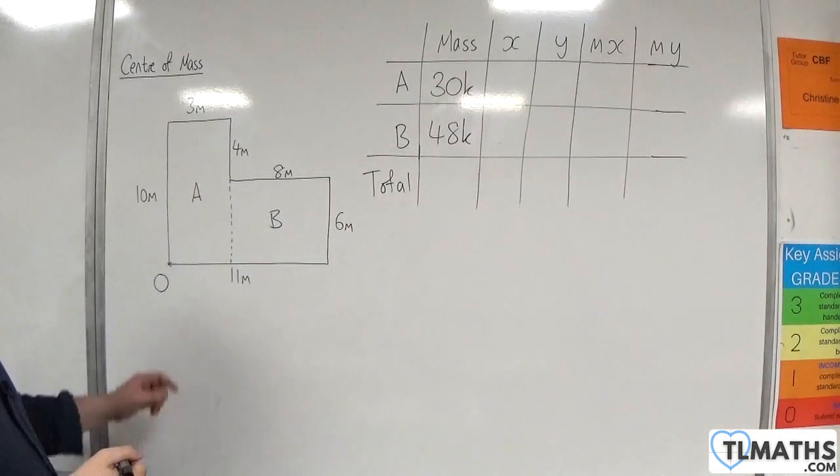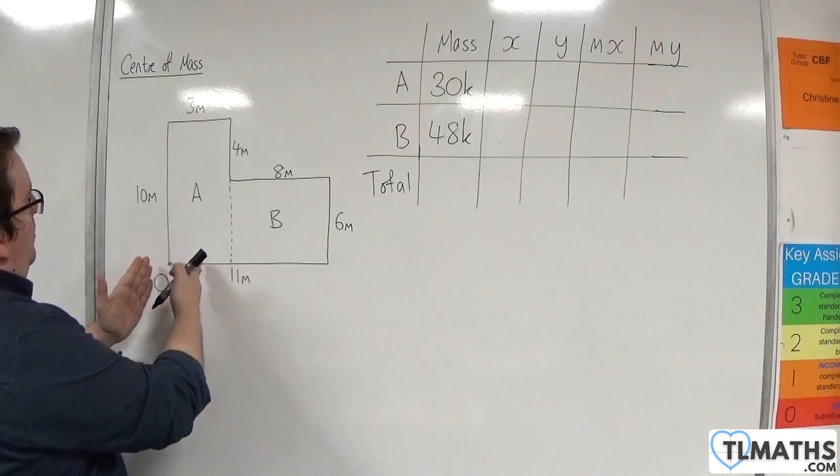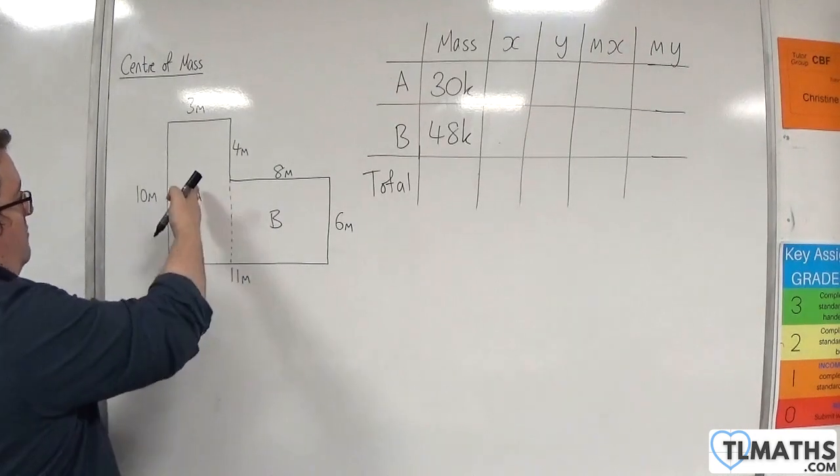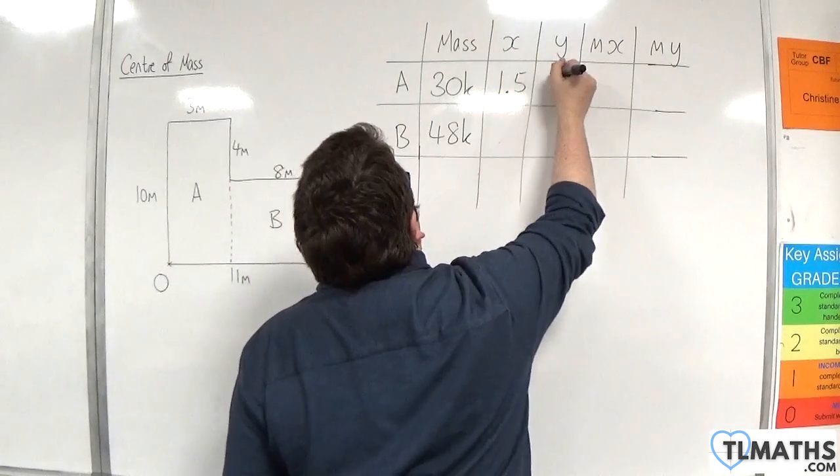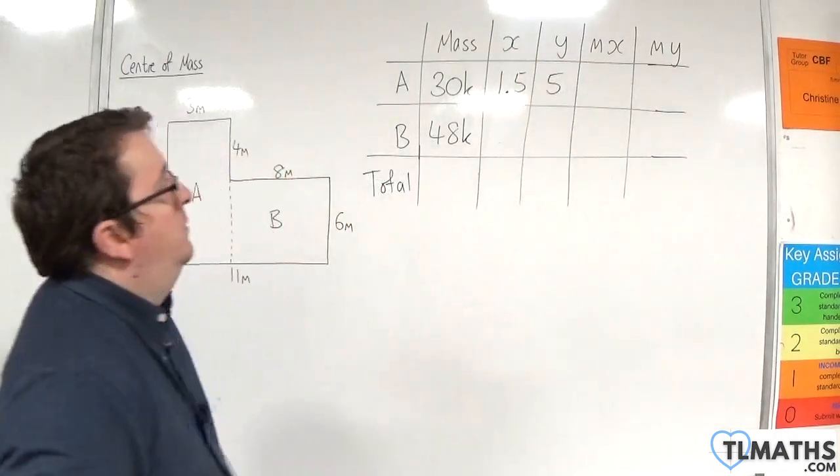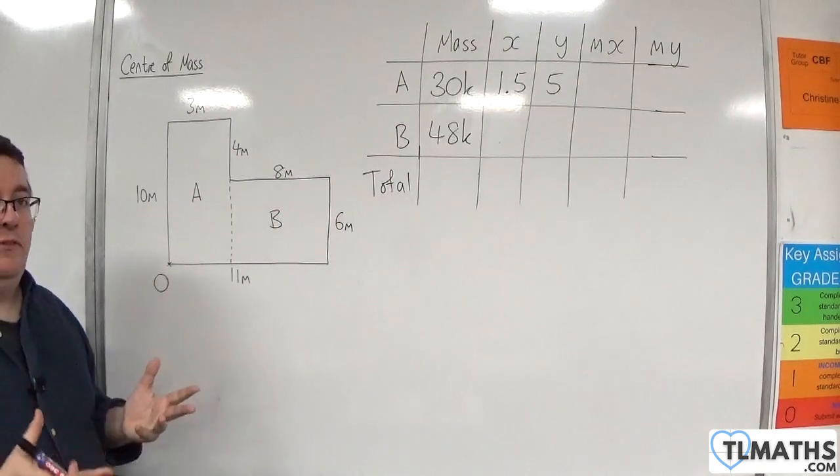Now the center of mass of rectangle A will be 1.5 meters along, 5 meters up. So 1.5 by 5. That's the center of mass of A, because it would have to be in the center of the rectangle.